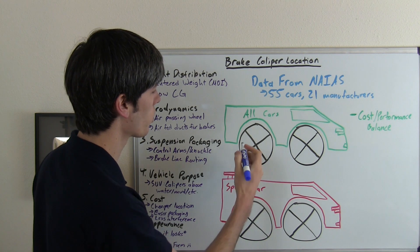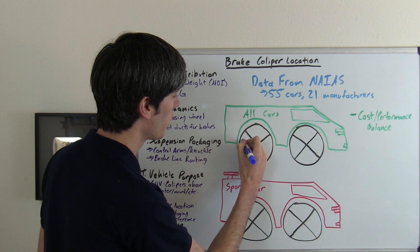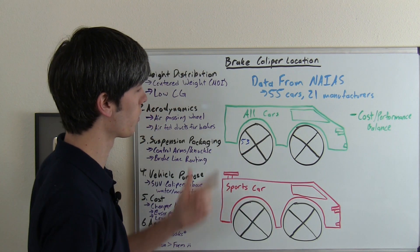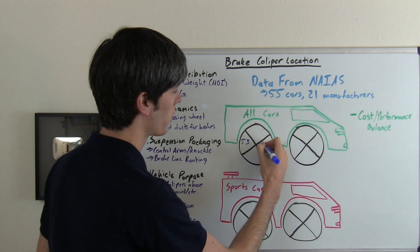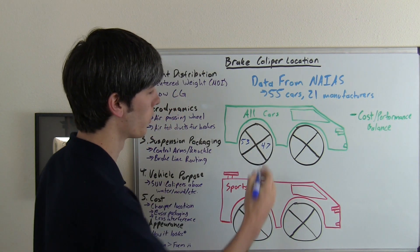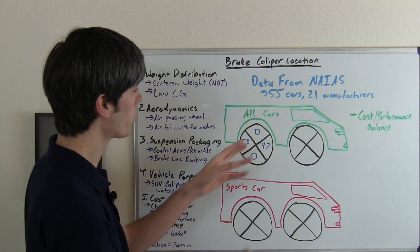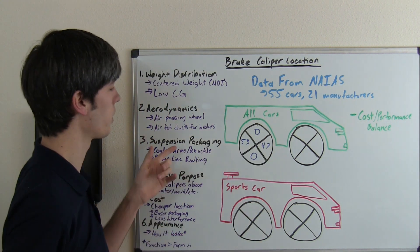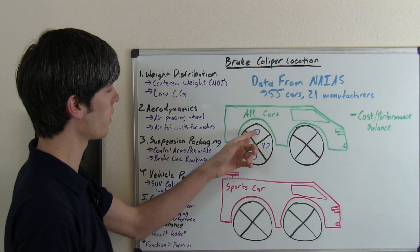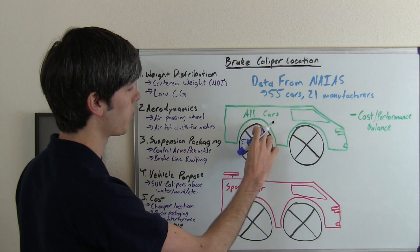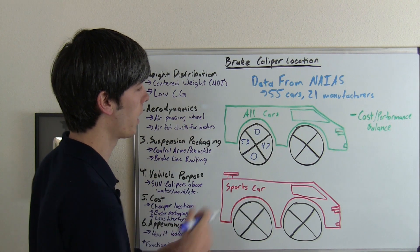So where they place the majority of them we've got 53 percent were towards the rear on the rear wheel, 47 percent on the inner of the rear wheel, zero up top, zero on the bottom. So I think the suspension packaging is playing the role here. We've got your control arms interfering and you're not going to be placing the brake calipers up high or down low.